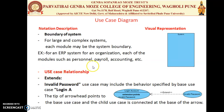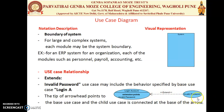The next is the Use Case Relationship. There are three different relationships. The first is Extend. Extend means a use case may include behavior specified by the base case. For example, Login Account is the Parent Use Case and Invalid Password is the extended use case — the behavior may be valid or invalid. The arrow always points from the Child Use Case to the Parent Use Case.